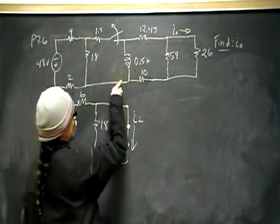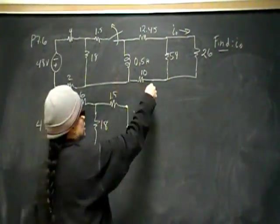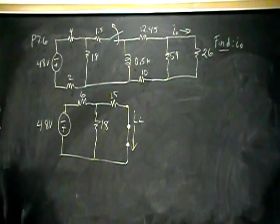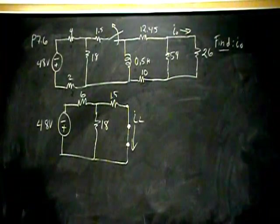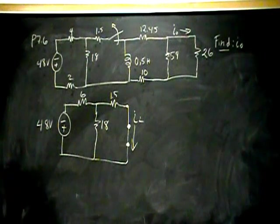We're looking for that current. We need to find it because once the switch opens, then it's going to start going places and it's going to go through, split here, and go through the 26 ohm resistor. So we need to find the initial current through the inductor. So to do that, I use source transformation.